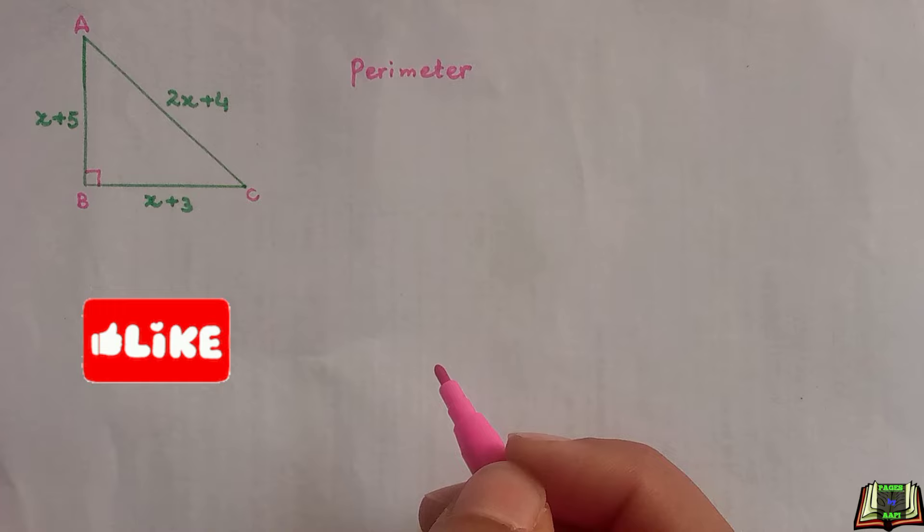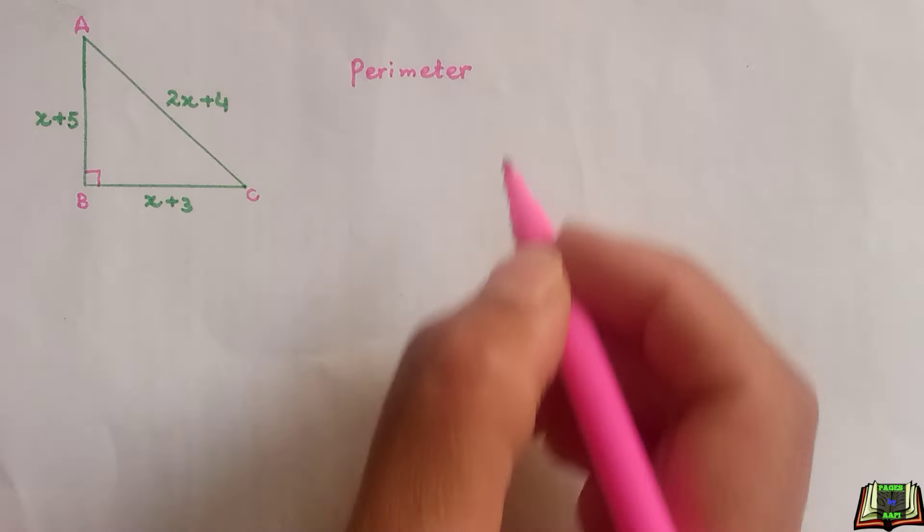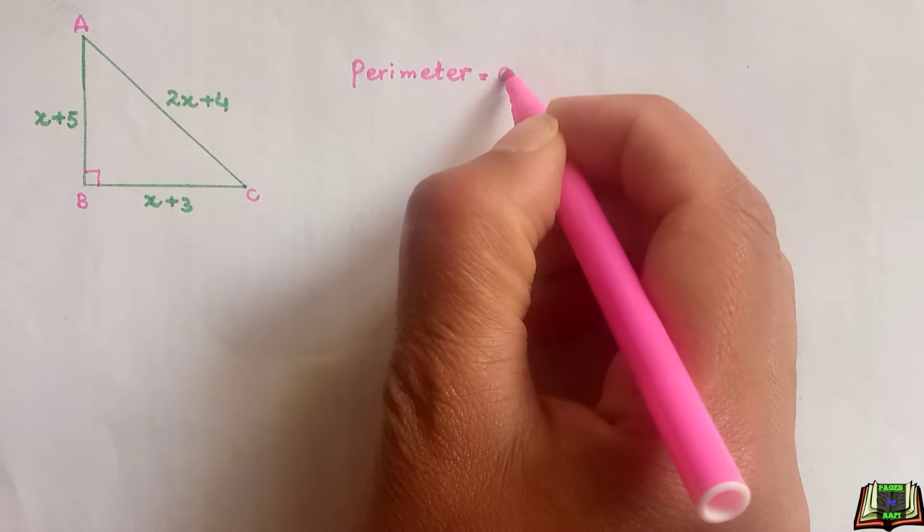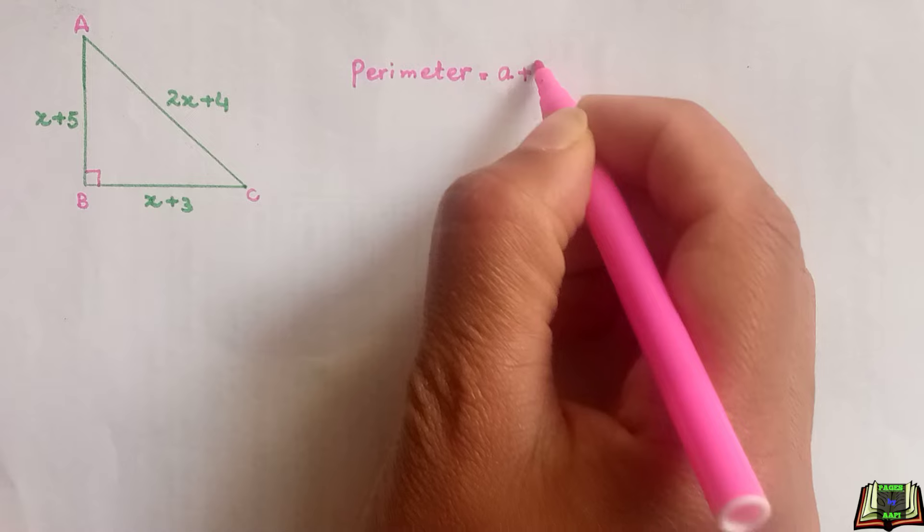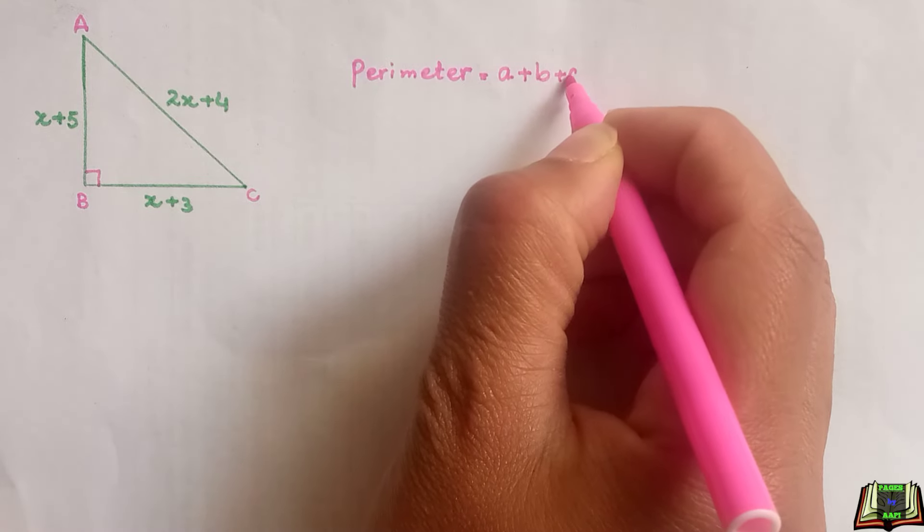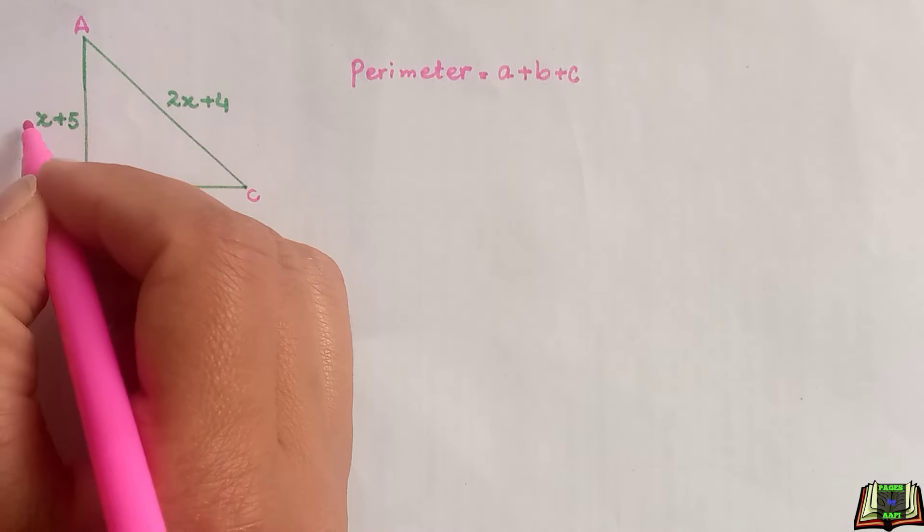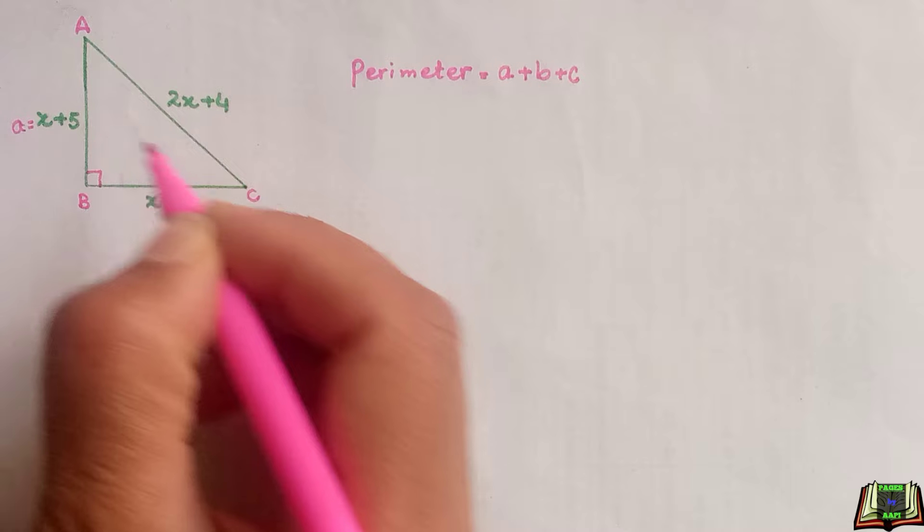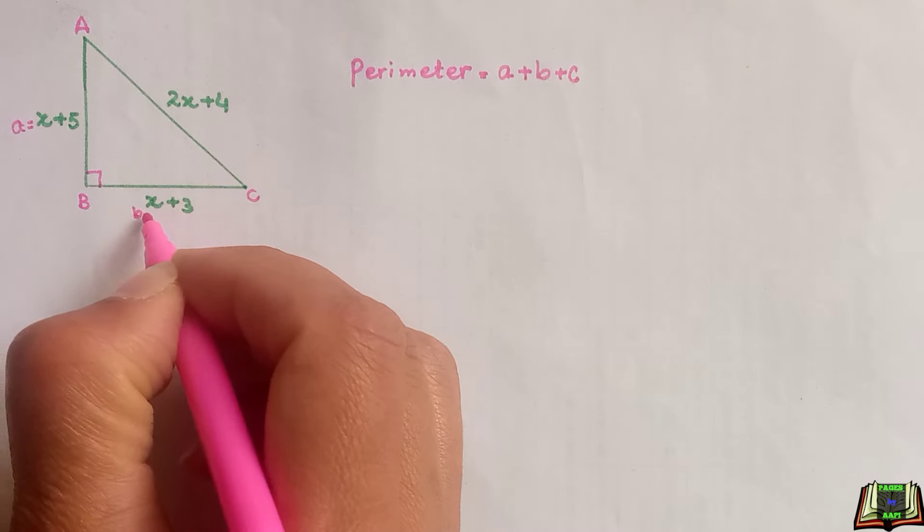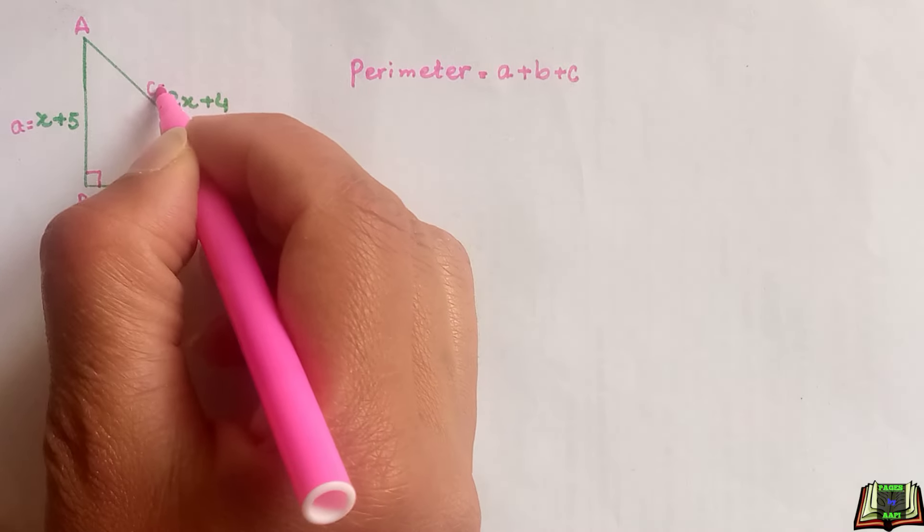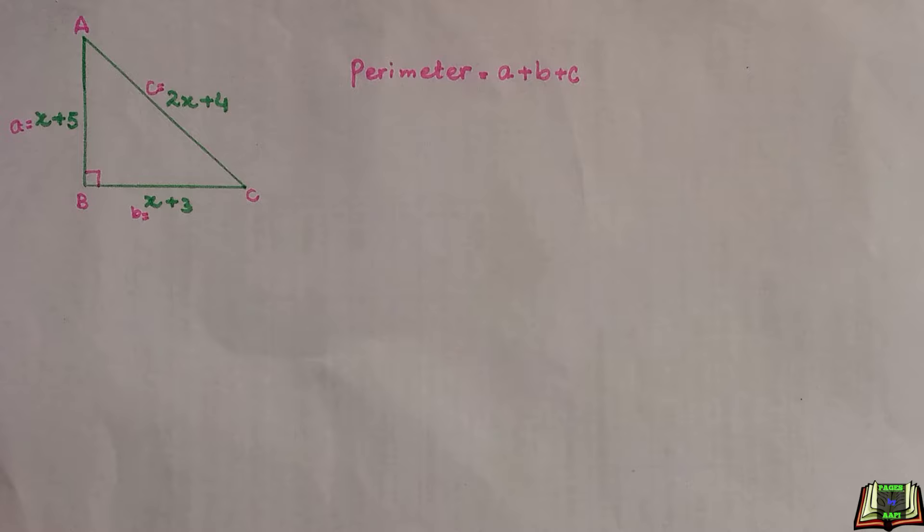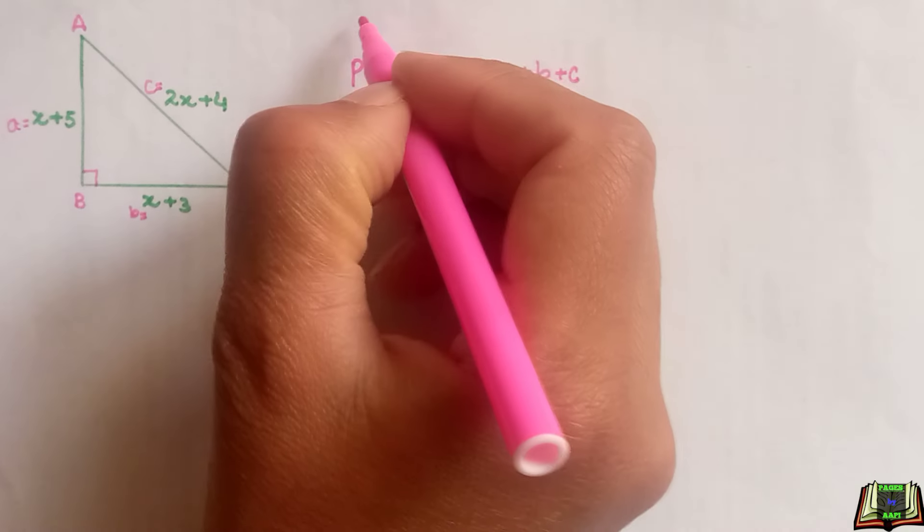As we know, the perimeter is the sum of all three sides. If we name these sides as a, b, and c, perimeter will be a plus b plus c. If we name this perpendicular side as a, this base side as b, and this hypotenuse side as c.